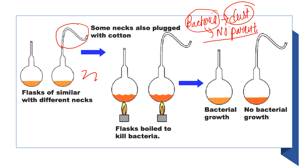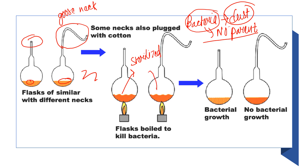He put nutrient broth into two flasks — one gooseneck-shaped flask and one regular flask. He then heated both flasks so that the nutrients were sterilized. He placed both flasks in the environment for some days. It was observed that in the gooseneck-shaped flask there was no bacterial growth, whereas in the regular flask there was bacterial growth.